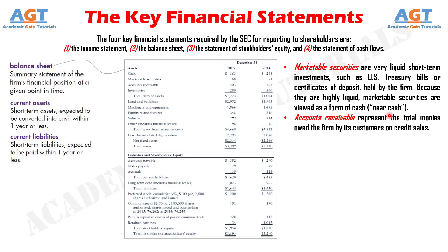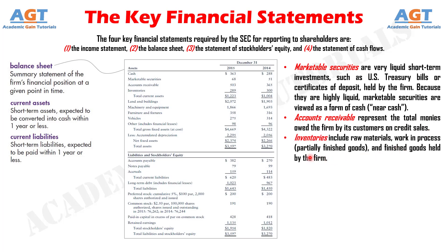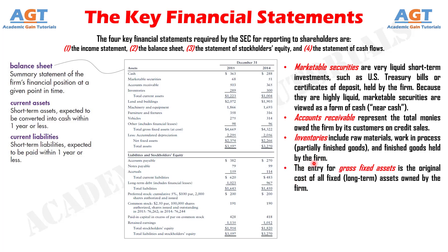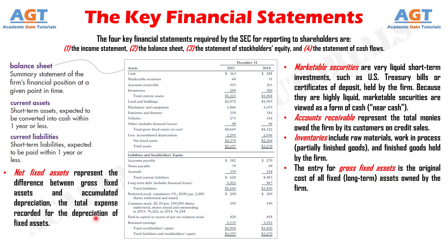Accounts receivable represent the total monies owed the firm by its customers on credit sales. Inventories include raw materials, work in process, partially finished goods, and finished goods held by the firm. The entry for gross fixed assets is the original cost of all fixed, long-term assets owned by the firm. Net fixed assets represent the difference between gross fixed assets and accumulated depreciation — the total expense recorded for the depreciation of fixed assets. The net value of fixed assets is called their book value.